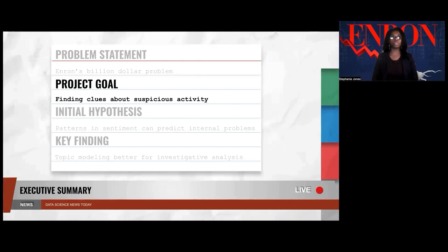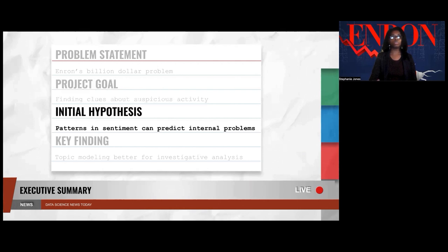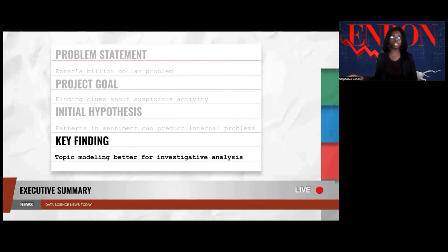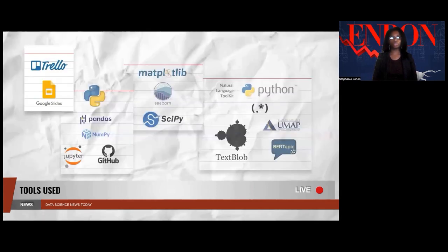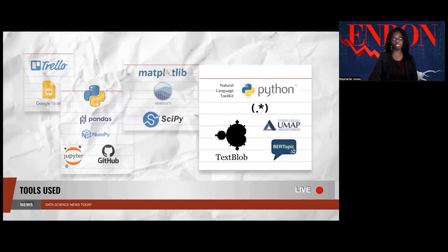The overall goal of our project was to identify patterns in employee emails that could give us clues about what was going on within the company prior to its collapse. Initially, we believed sentiment scores would change according to key events over the timeline of Enron's collapse. What we found was that sentiment scores were relatively steady over that time, so we pivoted and looked at how we could use topic modeling to identify key themes in employee emails over time. Here, you'll find tools we used throughout the project. We used Trello for project planning and Google Slides to present our findings. We coded using Python and Jupyter Notebooks and Git for version control, pushing our notebooks to GitHub where you can find our working files and final report. For exploratory analysis, we used Matplotlib and Seaborn's visualization libraries, along with SciPy for statistical analysis. We used Python libraries for text processing and TextBlob and NLTK's VADER for sentiment scoring. For topic modeling, we used BERT Topic along with UMAP for vector simplification and model reproducibility.